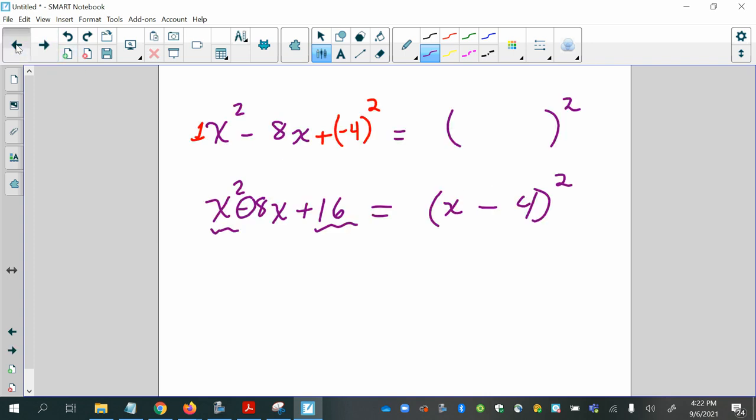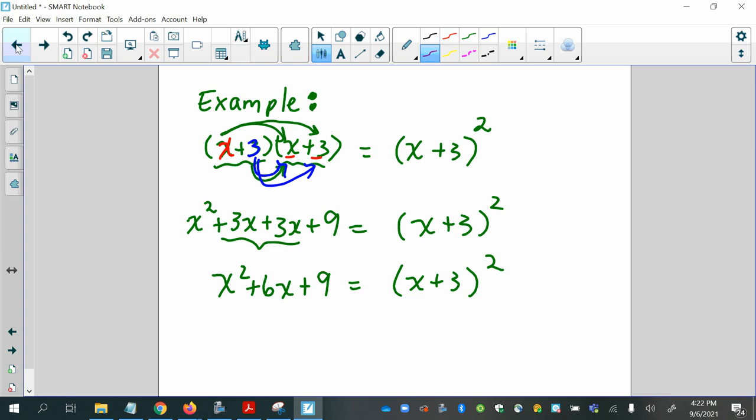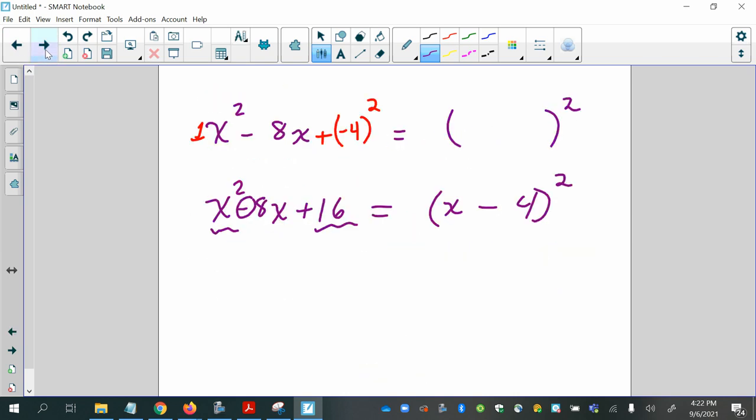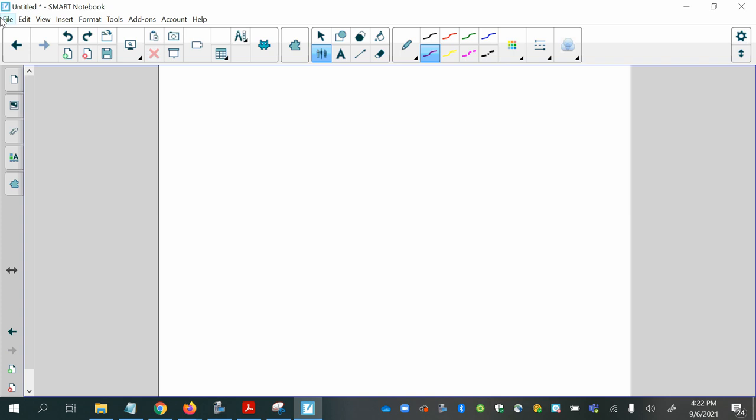As long as you have a lead coefficient of 1. Now, if you have a lead coefficient that is not 1, it becomes more of a challenge. So, for instance, if I had 4x squared plus 12x, and I was trying to complete the square so I could write it as a perfect square, as a binomial squared, then I would have some other things to consider, which are not covered in this video.